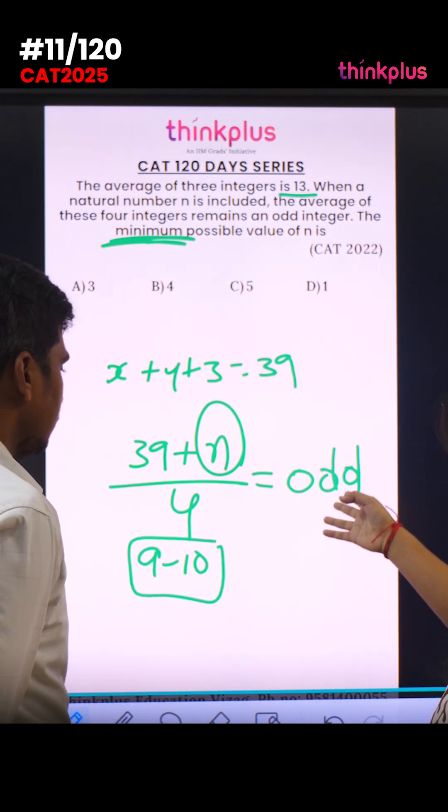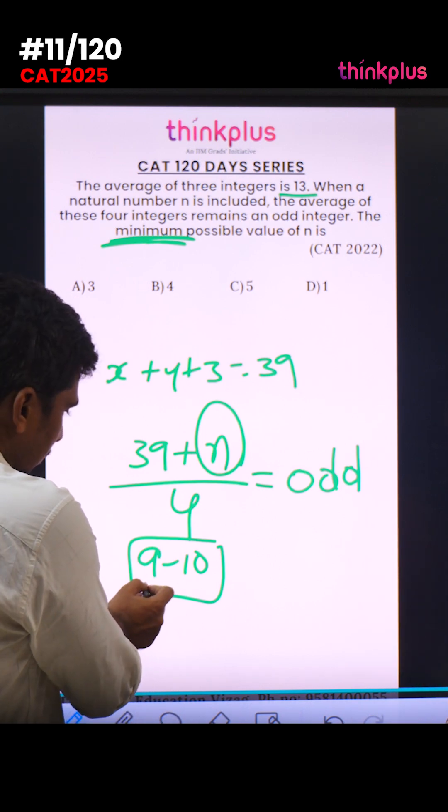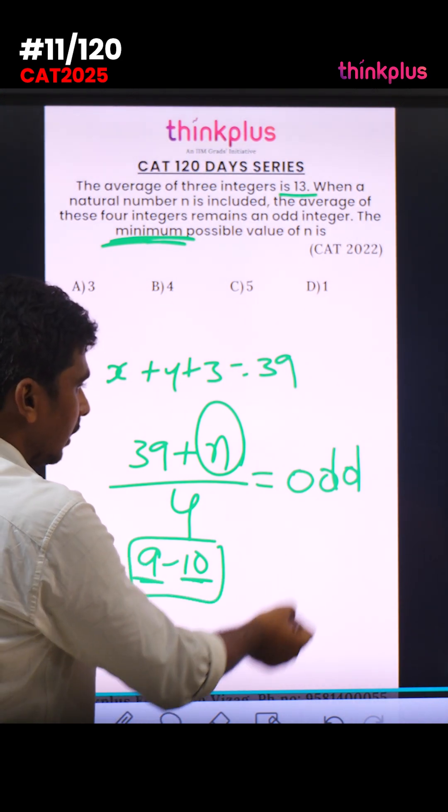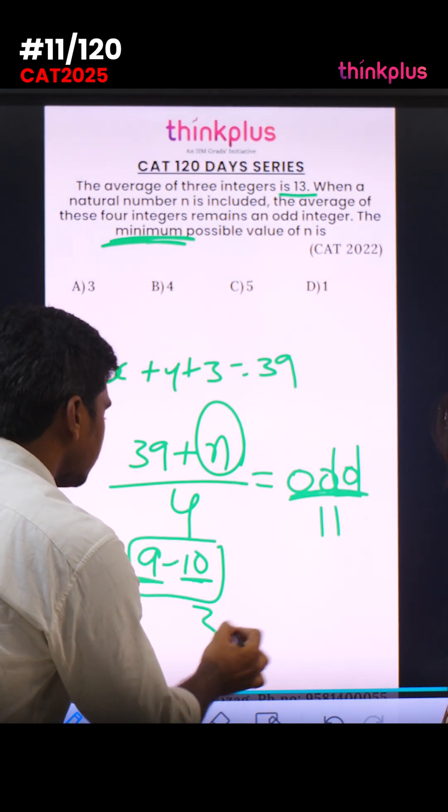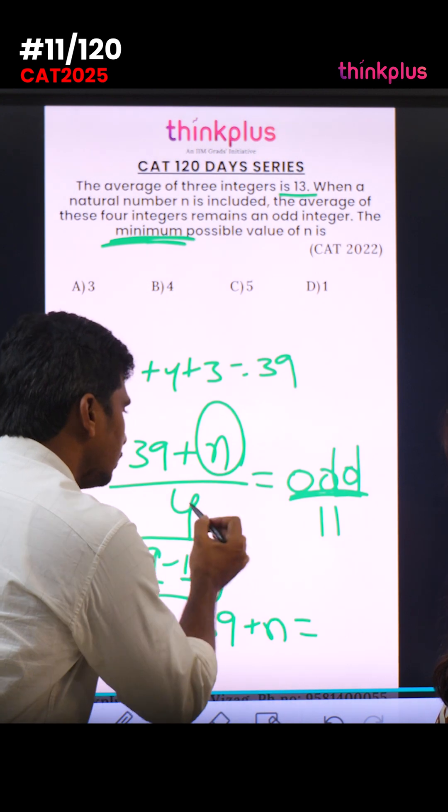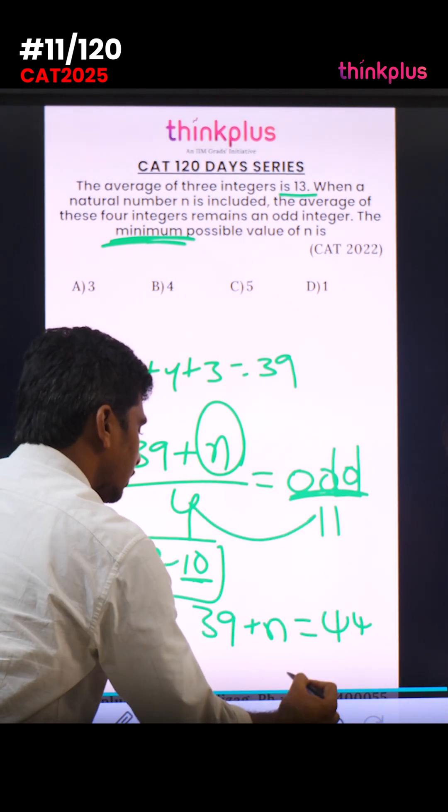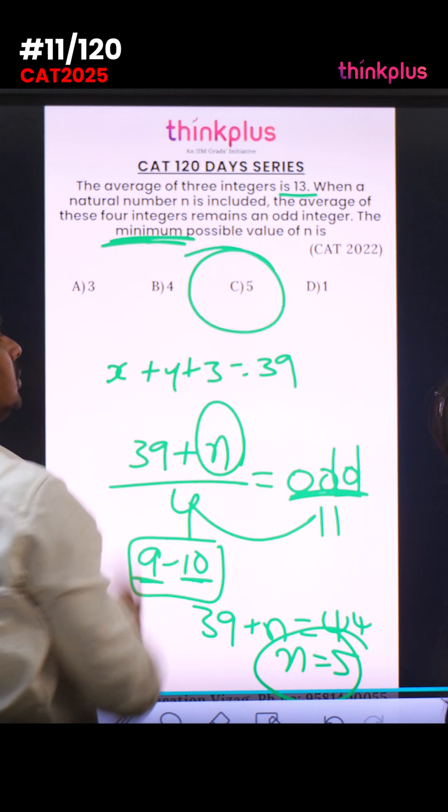So next odd number, at least 11. 9 is odd number. Next odd number is 11. And minimum of that will be 11. So then 39 plus n equals 44. N equals 5.